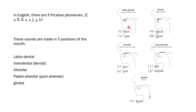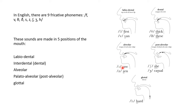Labiodental sounds are made through the articulation of the top teeth with the lower lip, like the sound /f/ as in 'fast' and /v/ as in 'van'. The dental sounds are made by an articulation between the tongue and the teeth: /θ/ as in 'thick' and /ð/ as in 'these'. The alveolar fricatives are made by an articulation between the tongue and the alveolar ridge, and these sounds include /s/ as in 'so' and /z/ as in 'zen'.